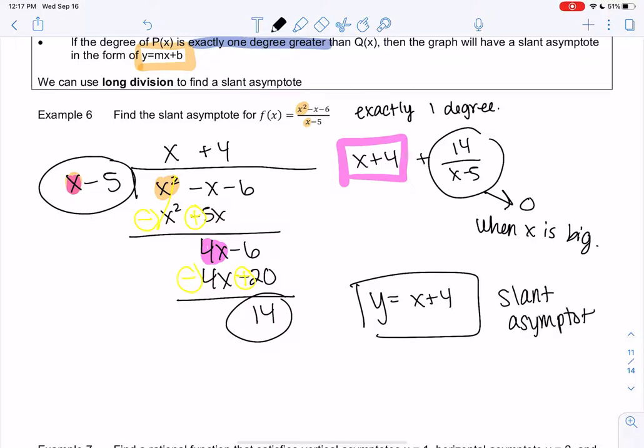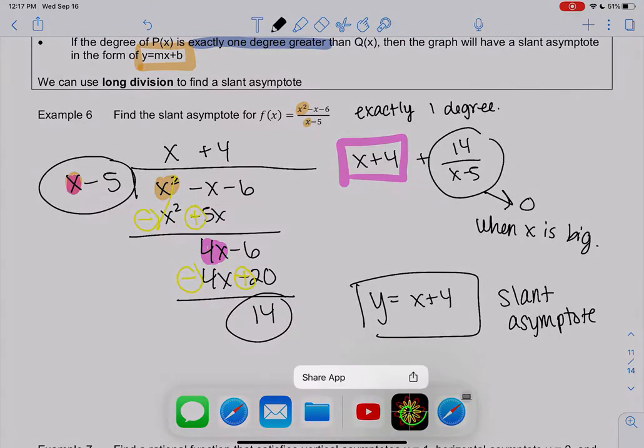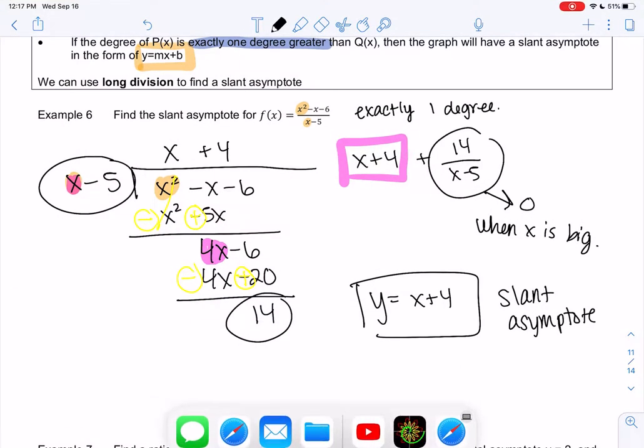If you think about plugging in really big numbers for x, the second piece is going to go to zero when x is really big, and that's what creates a slant asymptote. So my slant asymptote is x plus 4. The remainder is going to approach zero. Let's do a little backwards thinking and then we can do full-on graphing.